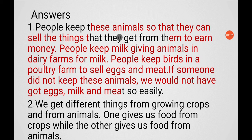People keep animals like cow, goat, buffalo, hen, sheep, and duck so they can sell the things they get from them to earn money. People keep milk-giving animals in dairy farms for milk. People keep birds in a poultry farm to sell eggs and meat. If no one kept these animals, we would not get eggs, milk, and meat so easily.